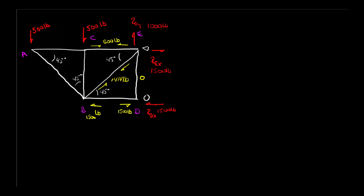We're back at point C and what we're going to talk about briefly is looking at point C as a free body diagram. At C I've got my point, I have 500 pounds coming down into it from on top — that's the weight. I have 500 pounds from vector CE pulling away, some unknown quantity CB going down, and some unknown quantity AC going out. This becomes pretty simple vector math.